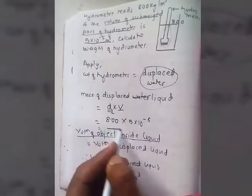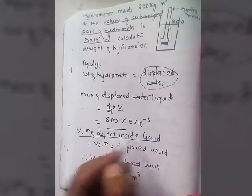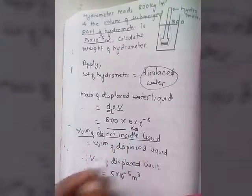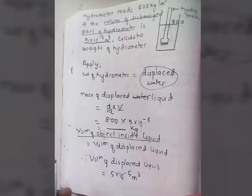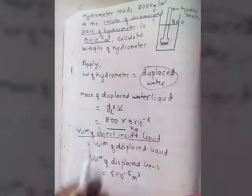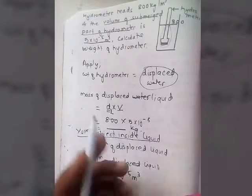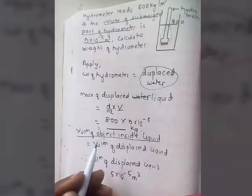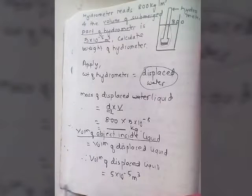Substituting: mass of displaced liquid = 800 × 5 × 10⁻⁵, giving us the mass in kilograms. Once we have the mass, we multiply by g (9.8 or 10) to get the weight of the hydrometer.